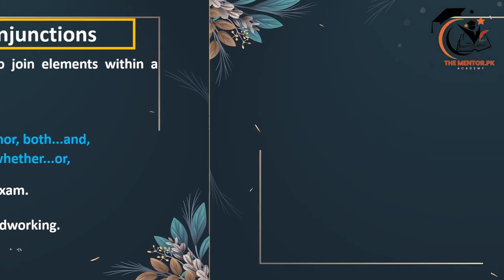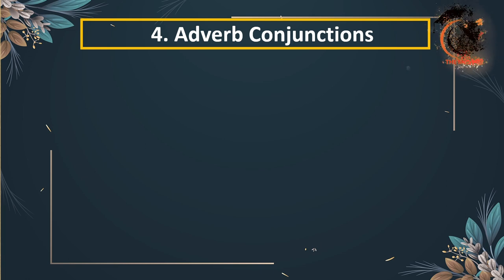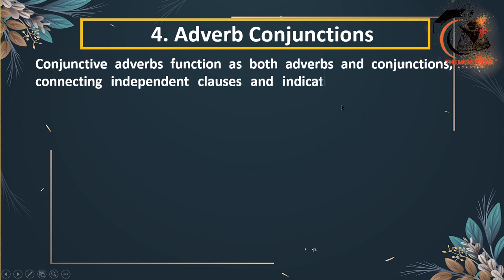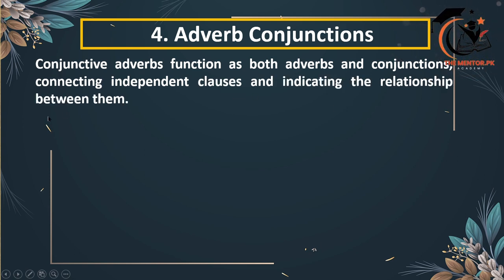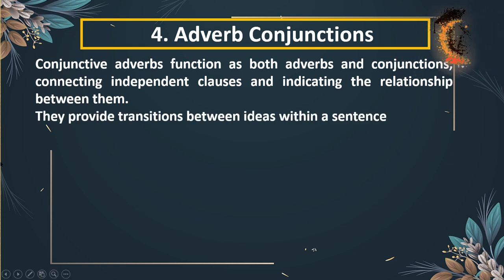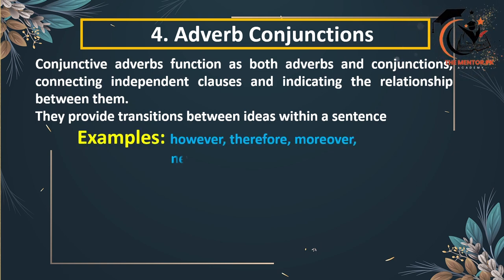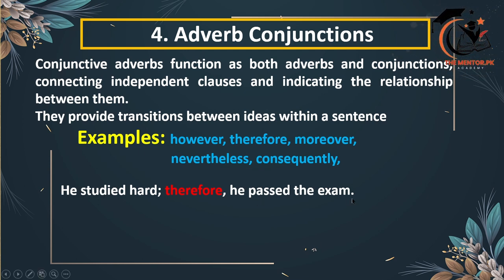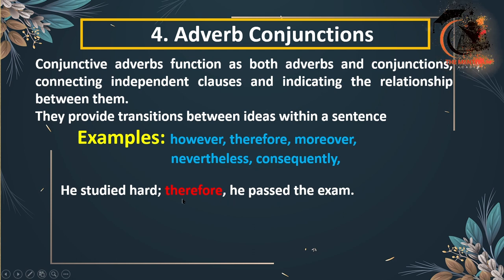The fourth type is adverbial conjunctions. These conjunctions function as both adverbs and conjunctions, connecting clauses and indicating relationships between them. They provide transitions between ideas within a sentence. The most common examples are: however, therefore, moreover, nevertheless, and consequently. For example: 'He studied hard, therefore he passed the exam.' Here, 'therefore' not only acts as an adverb for the verb but also connects the two clauses.